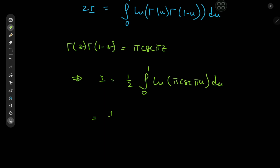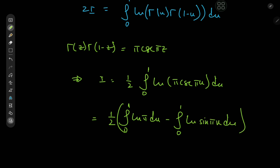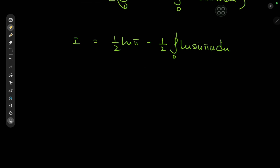Using the properties of the logarithm, we can break this down into a couple of integrals: 2I = ∫₀¹ log π du + ∫₀¹ log csc(πu) du. Now, log csc = −log sin, so we have 2I = ∫₀¹ log π du − ∫₀¹ log sin(πu) du. The first integral is straightforward — it equals log π — giving I = ½ log π − ½ ∫₀¹ log sin(πu) du.